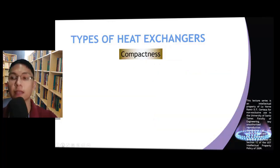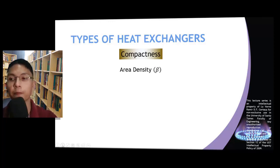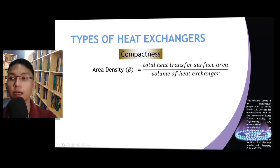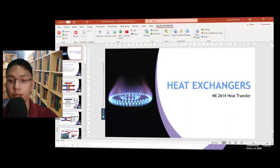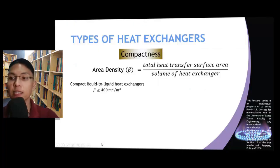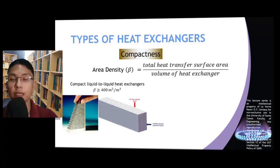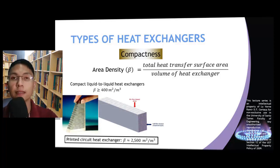The next characteristic by which we can categorize heat exchangers is related to their degree of compactness. We can determine how compact a heat exchanger is using the parameter called area density, often denoted by the Greek letter beta. It is computed by dividing the total surface area where heat transfer occurs by the total volume of the heat exchanger. For heat exchangers in which the heat transfer fluids are liquids, it can be considered compact if its area density exceeds 400 square meters per cubic meter. An example is the printed circuit heat exchanger, which has an area density of approximately 2500.